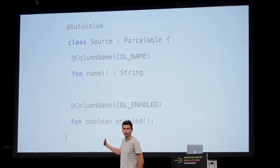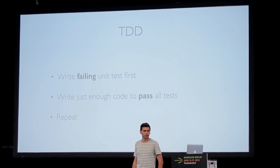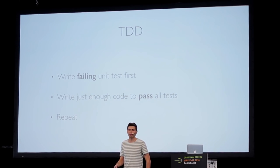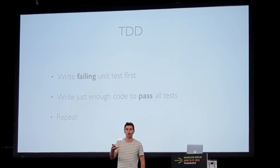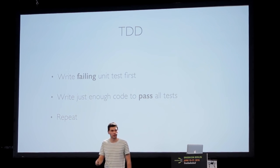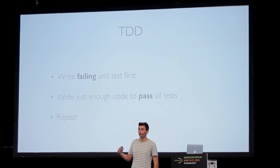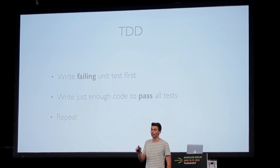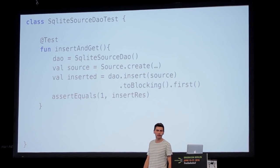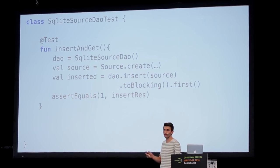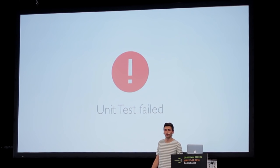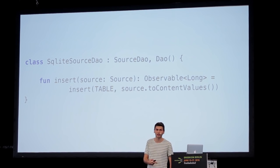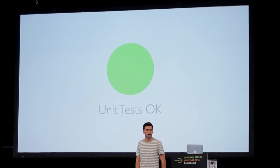Now let's start with TDD. We follow these rules: first we write a failing test — that sounds strange, but we will see what I mean. Then we write just enough code to get the unit tests to pass, and repeat. So we write a test like 'insert that item and assert it returns 1' because we've inserted one item. The test fails obviously because we haven't implemented it yet, so now we implement it.